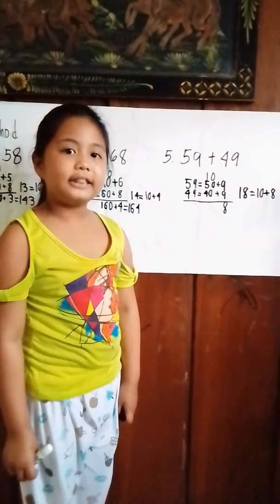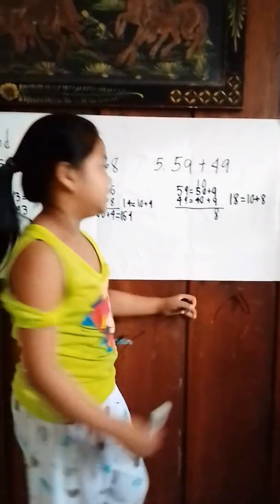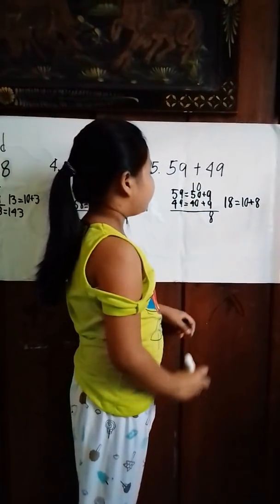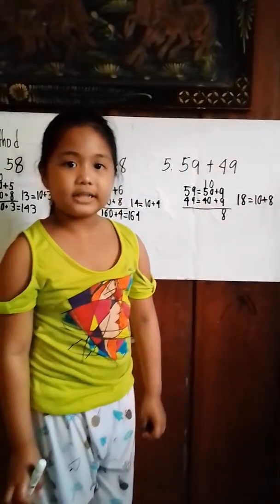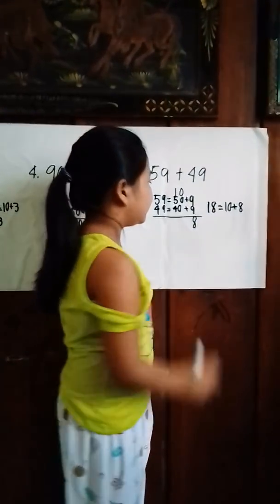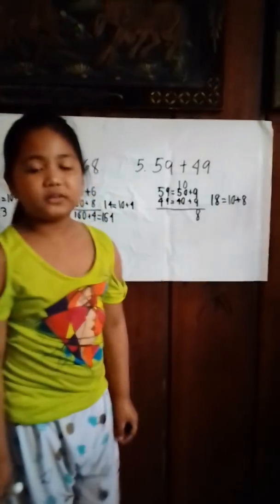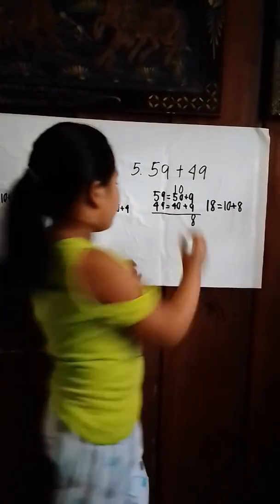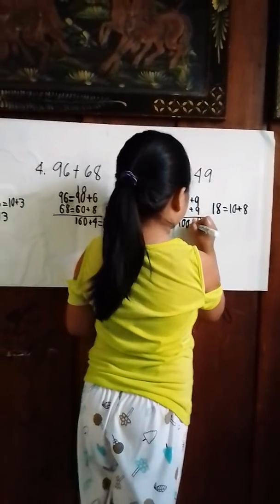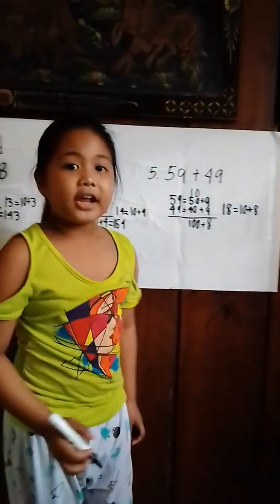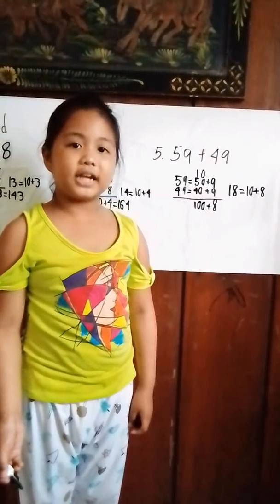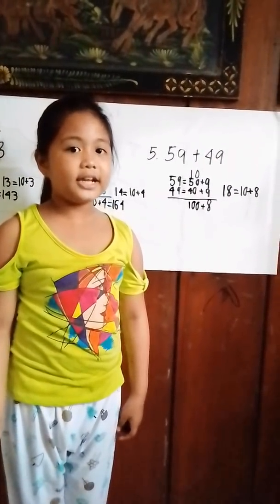We will add the tens place. 10 plus 50 equals 60. 60 plus 40 equals 100. 100 plus 8 equals 108. The answer is 108.